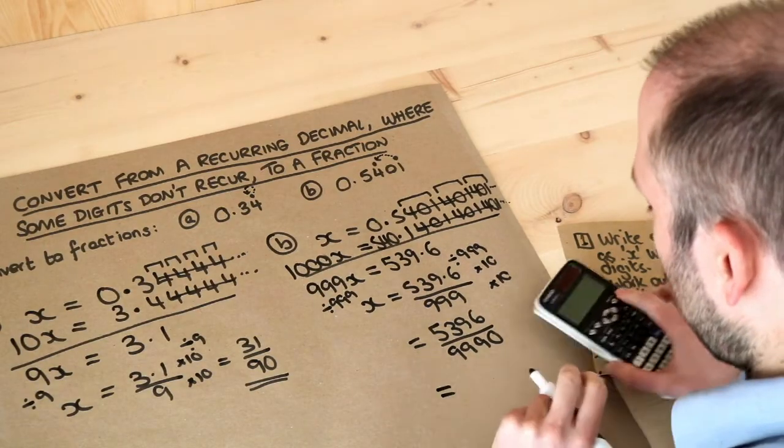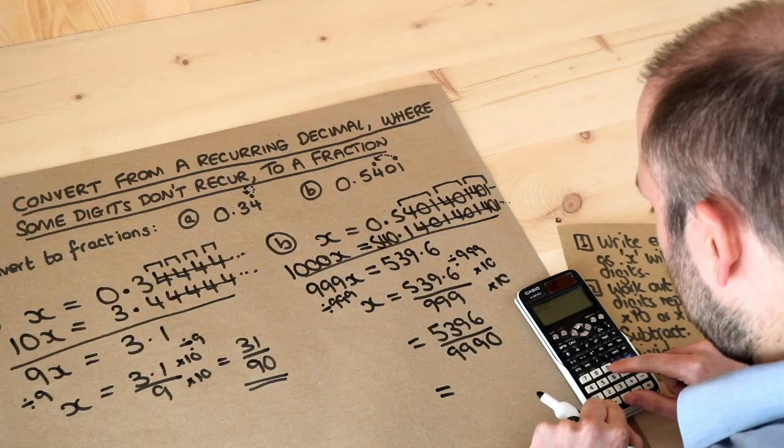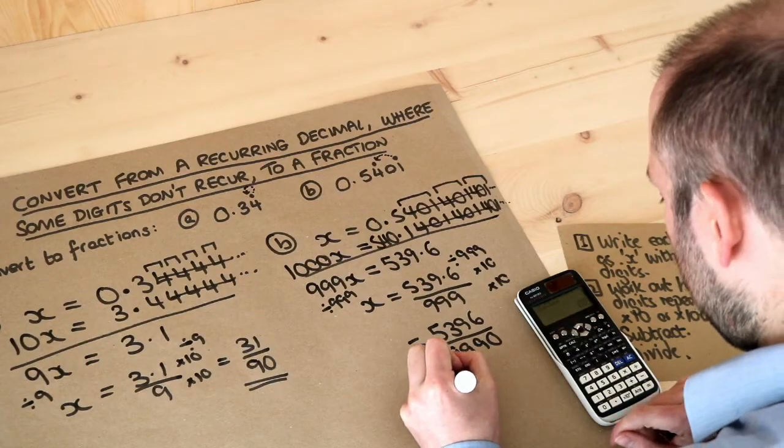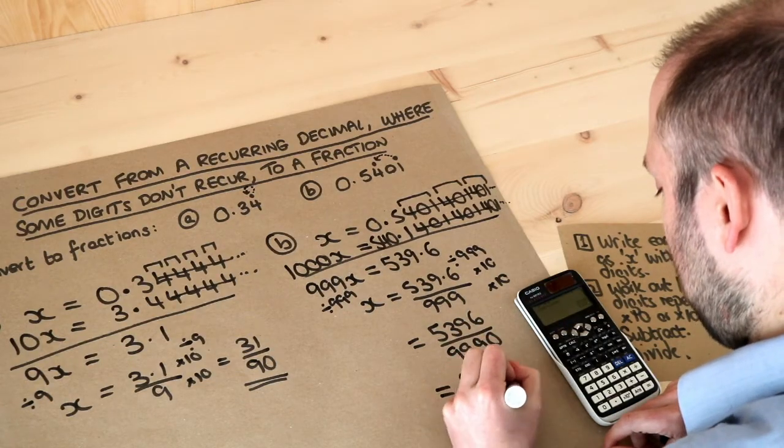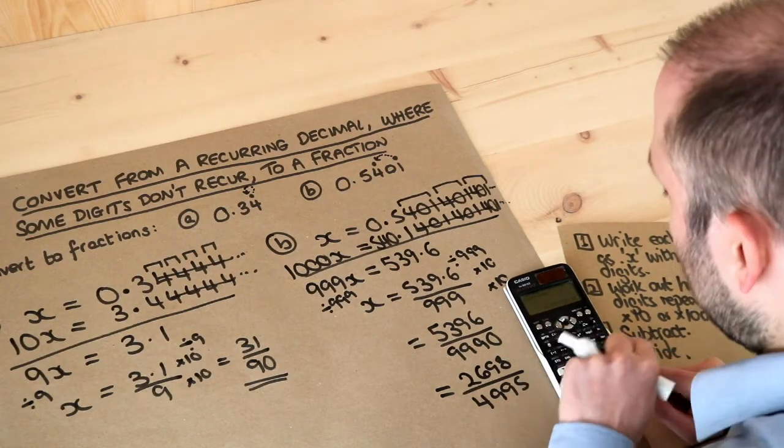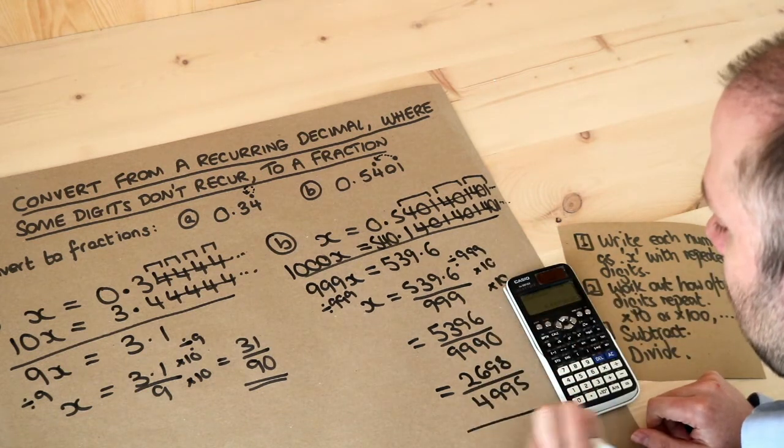And I must admit I can't be bothered to simplify this myself, so I'm just going to shove it into a calculator. So 5396 over 9990 and that simplifies to, well it's just divide the top and bottom by 2 to get that, and that doesn't simplify any further. If we press the SD key to check I do indeed get 0.5401414141. So this answer is correct.